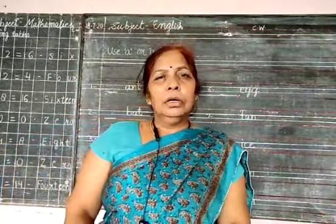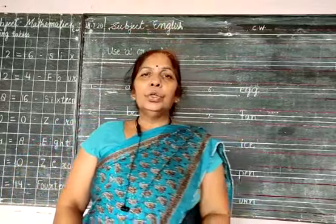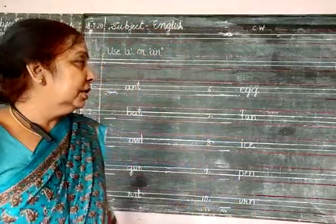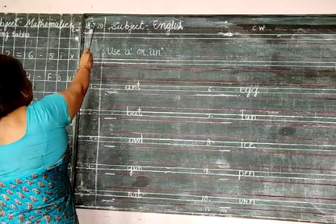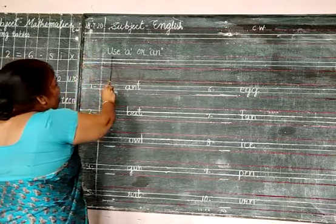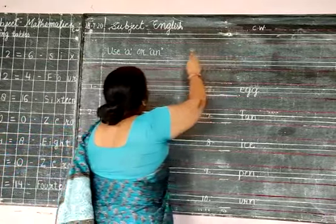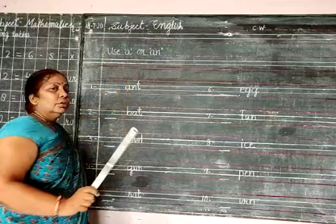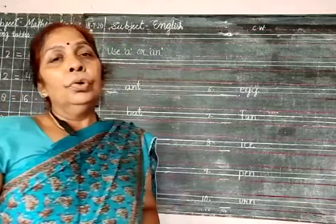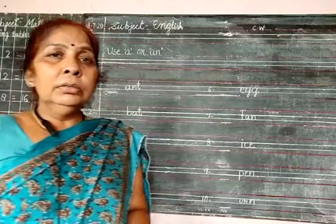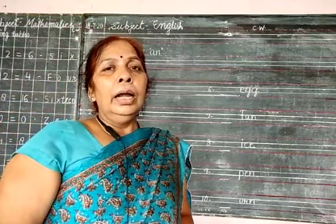Good morning children. How are you? I hope you are fine. You got your English copy. First you write today's date. You write the heading using A or N. Don't write Subject English. Today you will learn and write where you use A and AN.